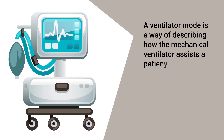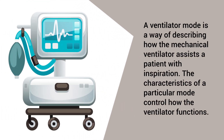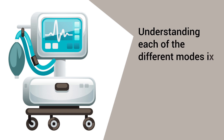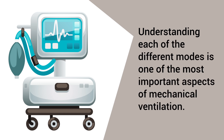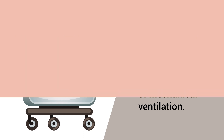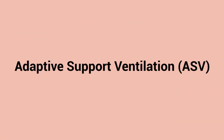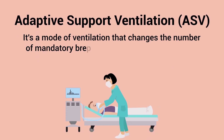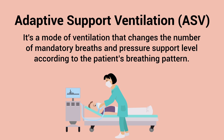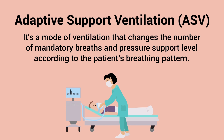A ventilator mode is a way of describing how the mechanical ventilator assists a patient with inspiration. The characteristics of a particular mode control how the ventilator functions. Understanding each of the different modes is one of the most important aspects of mechanical ventilation. One mode that is often overlooked is adaptive support ventilation, or ASV — a mode that changes the number of mandatory breaths and pressure support level according to the patient's breathing pattern.